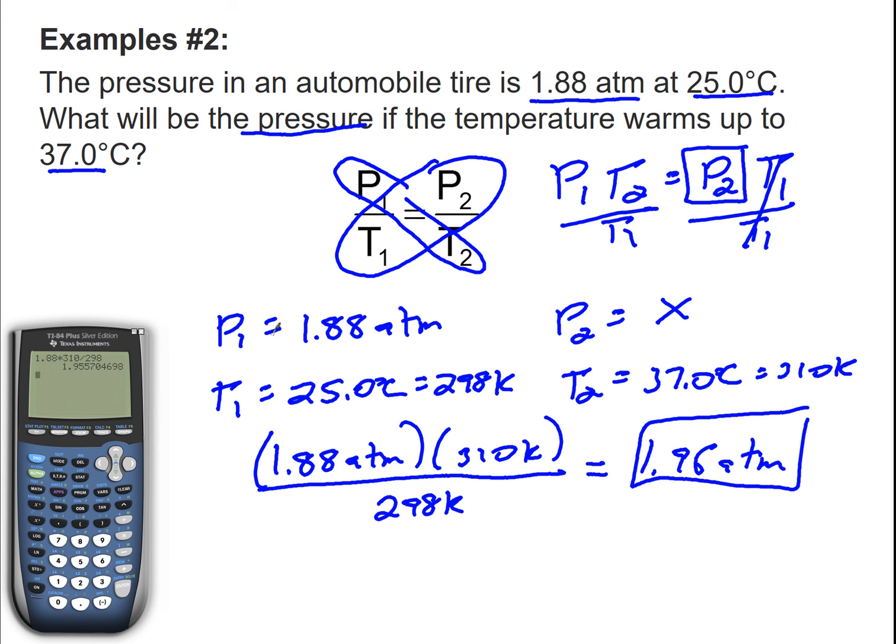Let's see if it's consistent with Gay-Lussac's Law, which is a direct relationship. My pressure is 1.88, goes up to 1.96. That means my temperature goes from 298 to 310. So as pressure goes up, temperature goes up, and that's consistent with Gay-Lussac's Law.